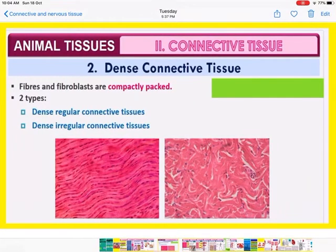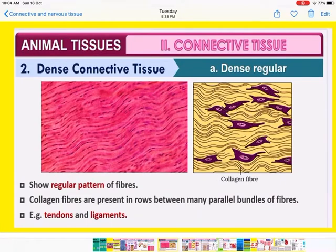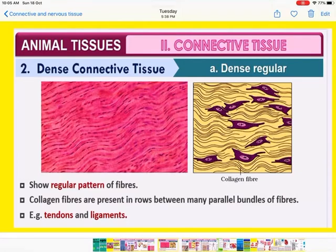In dense connective tissues, the fibroblast cells and the fibers are both compactly packed — they are not loosely packed. They are of two types: dense regular and dense irregular connective tissues. In dense regular connective tissue, the fibers show a regular pattern — they are parallel to each other, properly arranged in rows. Collagen fibers are present in rows between many parallel bundles of fibers.